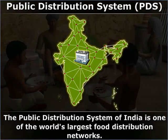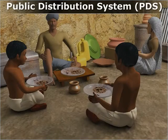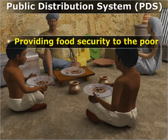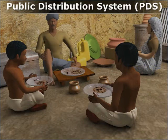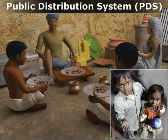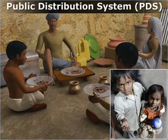The public distribution system of India is one of the world's largest food distribution networks. Over the years, it has been effective in providing food security to poor households and income security to farmers. However, it is sad to still find cases of hunger in some areas due to corruption.